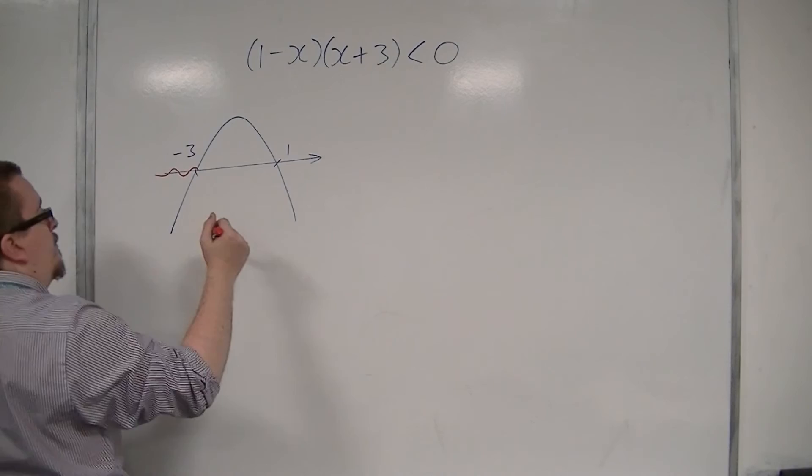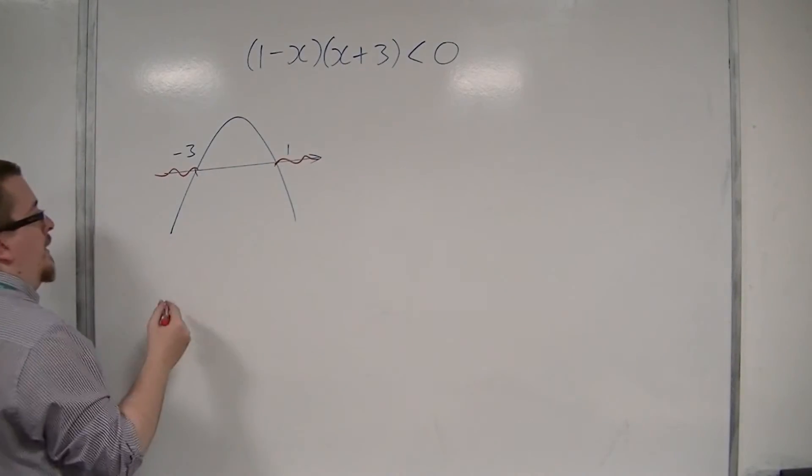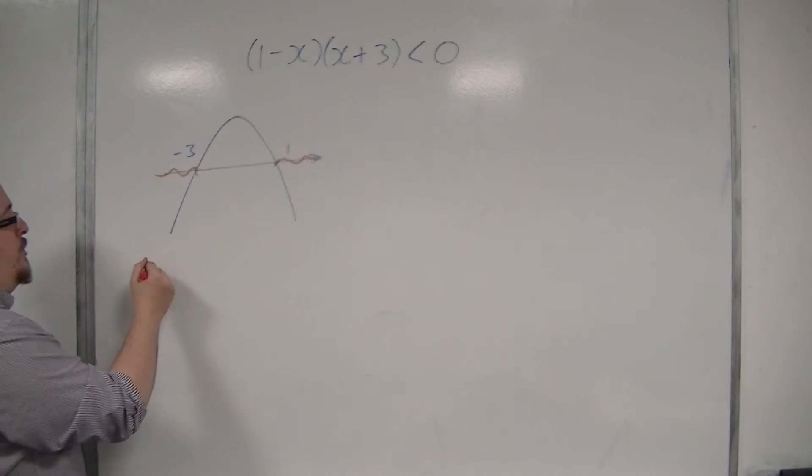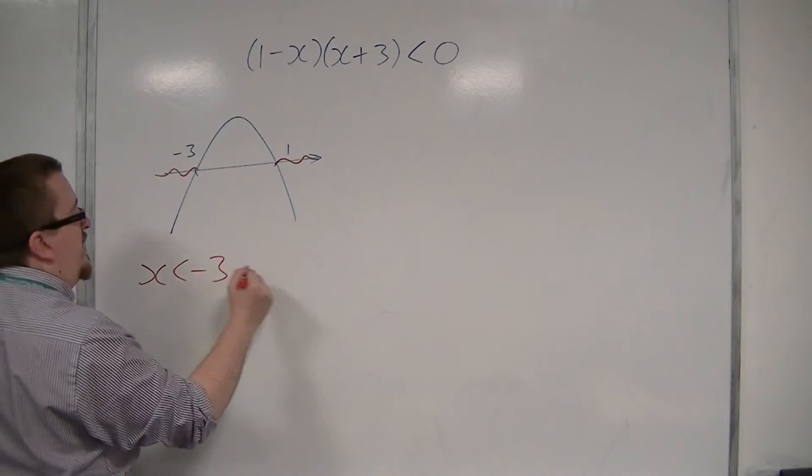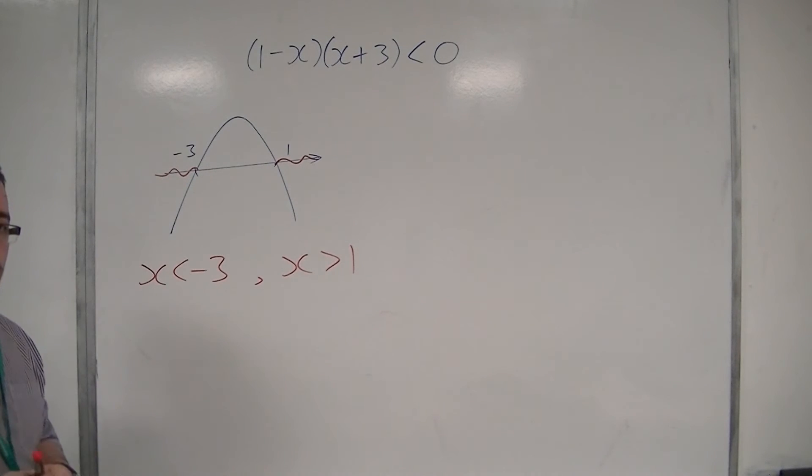to the left of minus 3, and there, to the right of 1. So two distinct regions, two distinct inequalities, and that solves the original problem.